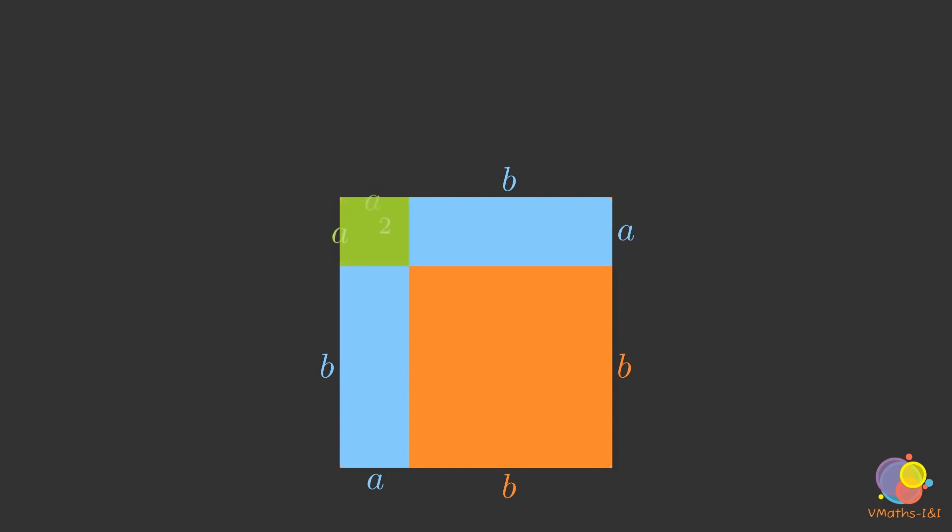A square of side a, a square of side b, and two rectangles of the same size with length b and width a.